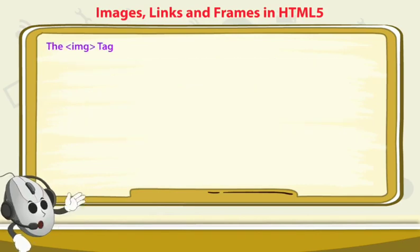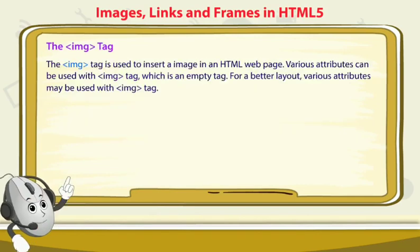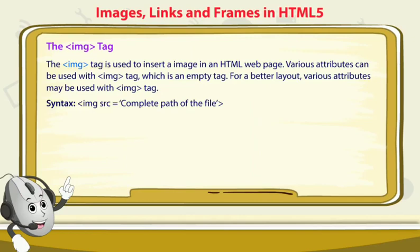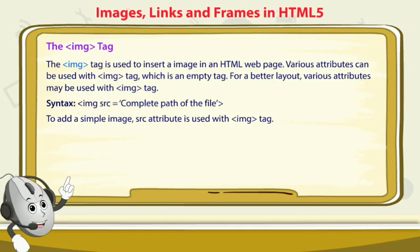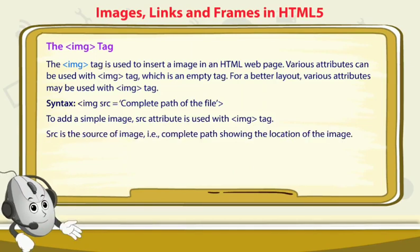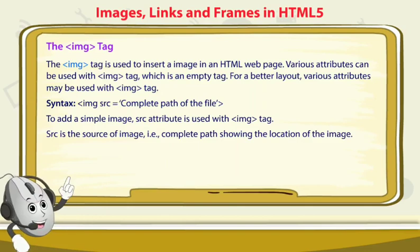The image tag is used to insert an image in an HTML web page. It is an empty tag and various attributes can be used with it for better layout. For example: IMG SRC equal to — in single quotes you write the path, specifying from which drive you have taken the image. To add a simple image, the SRC attribute is used with the image tag. SRC is the source — the complete path and location of the image.